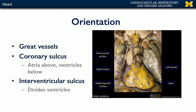Looking at this heart, it may not be evident because of the presence of so much pericardial fat, but there is a coronary sulcus — a groove that separates the atria above from the ventricles below. There's also an interventricular sulcus on both the anterior surface, the anterior interventricular sulcus, and the diaphragmatic surface, which hosts the posterior interventricular sulcus. This interventricular sulcus is a surface landmark representing where the interventricular septum, the wall dividing the right from the left ventricle, is.